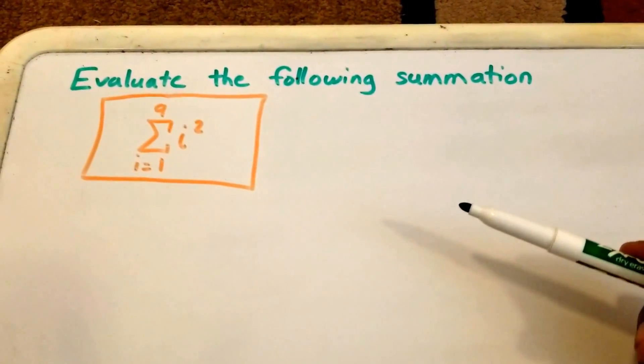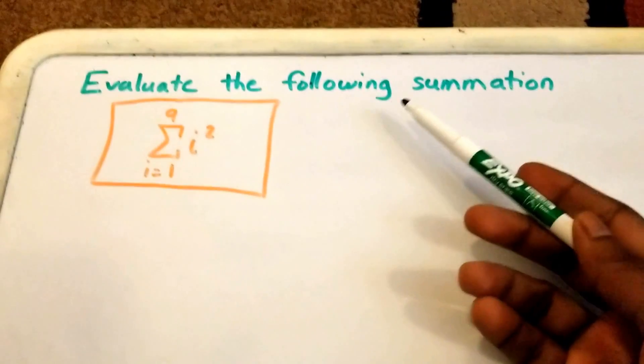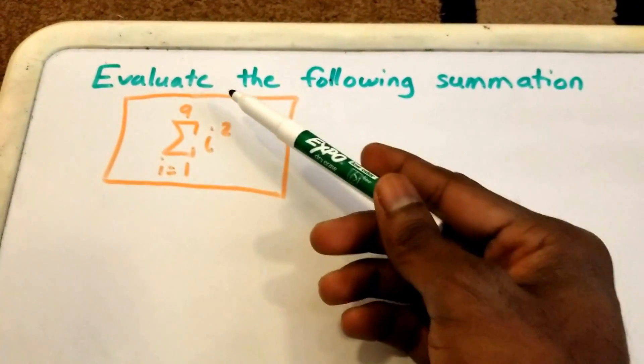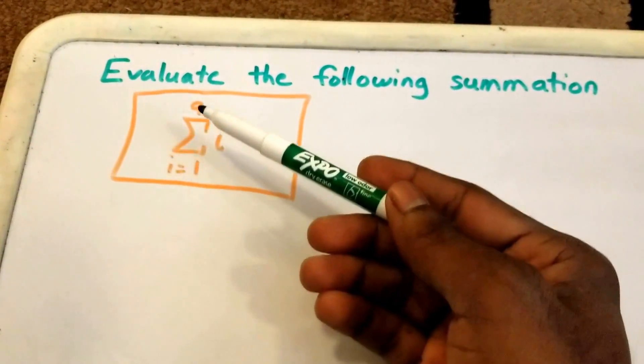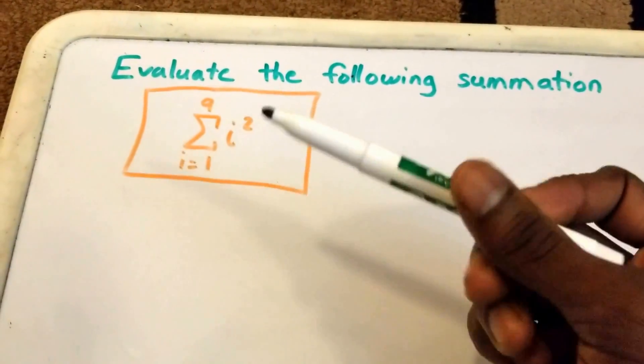Hey guys, welcome to this video on summations. So here we want to evaluate the following summation which we have in the orange rectangle here, and it runs from I equals 1 to 9 of I squared. So let's go ahead and rewrite the summation so we can solve it.